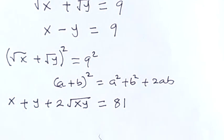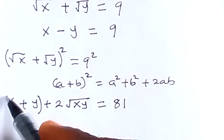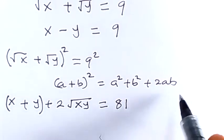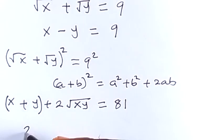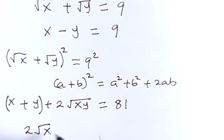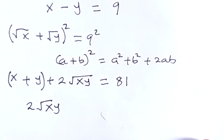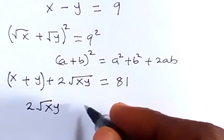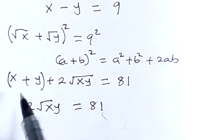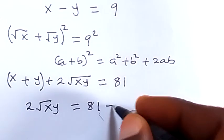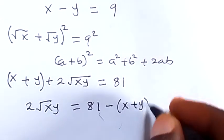From there, let's separate x plus y and take it to the right hand side. Then we have 2 root xy left here, equals to 81, then taking x plus y there as minus (x plus y).